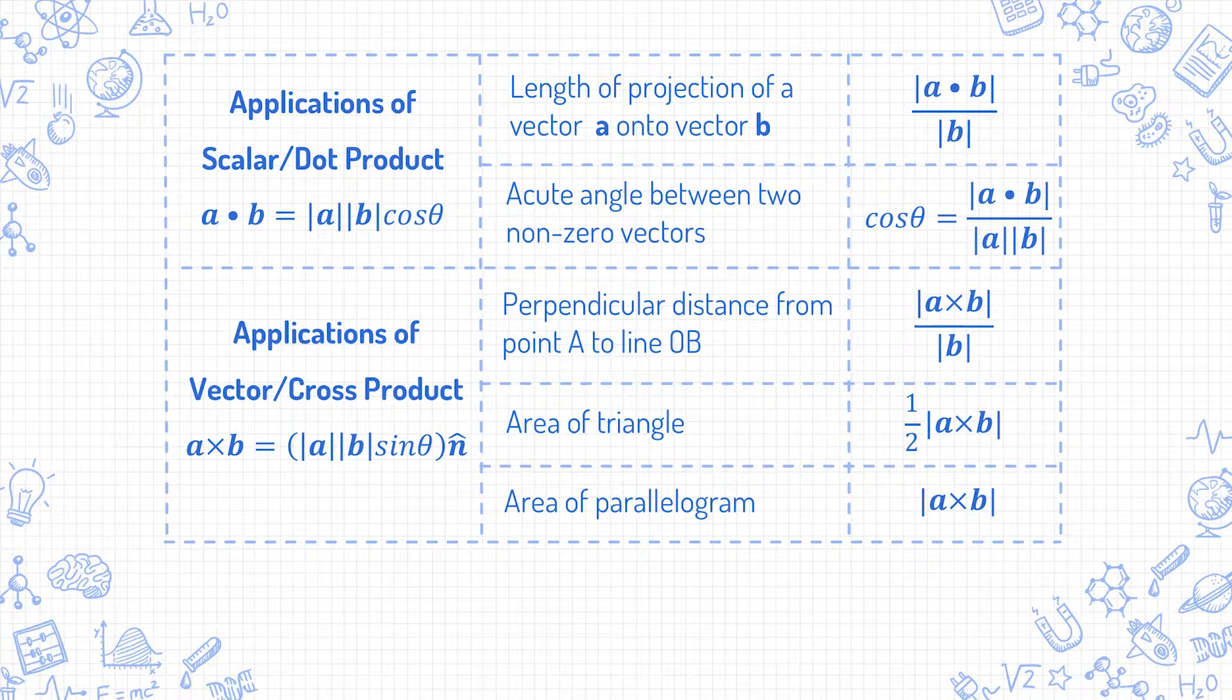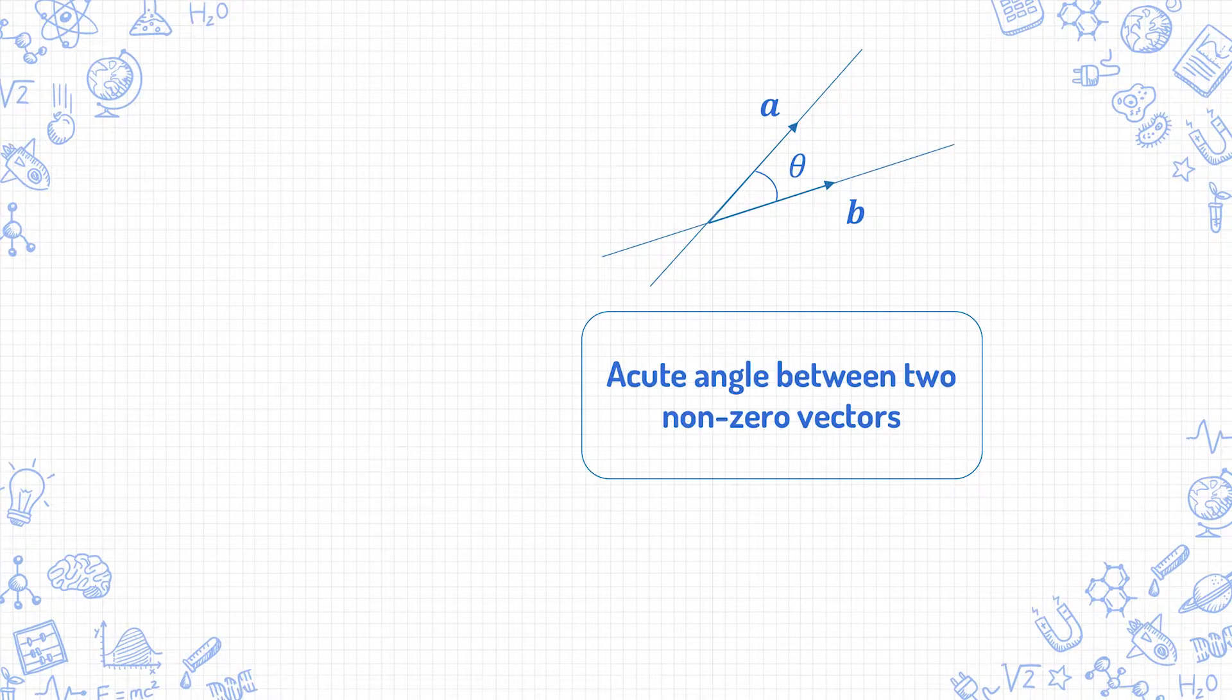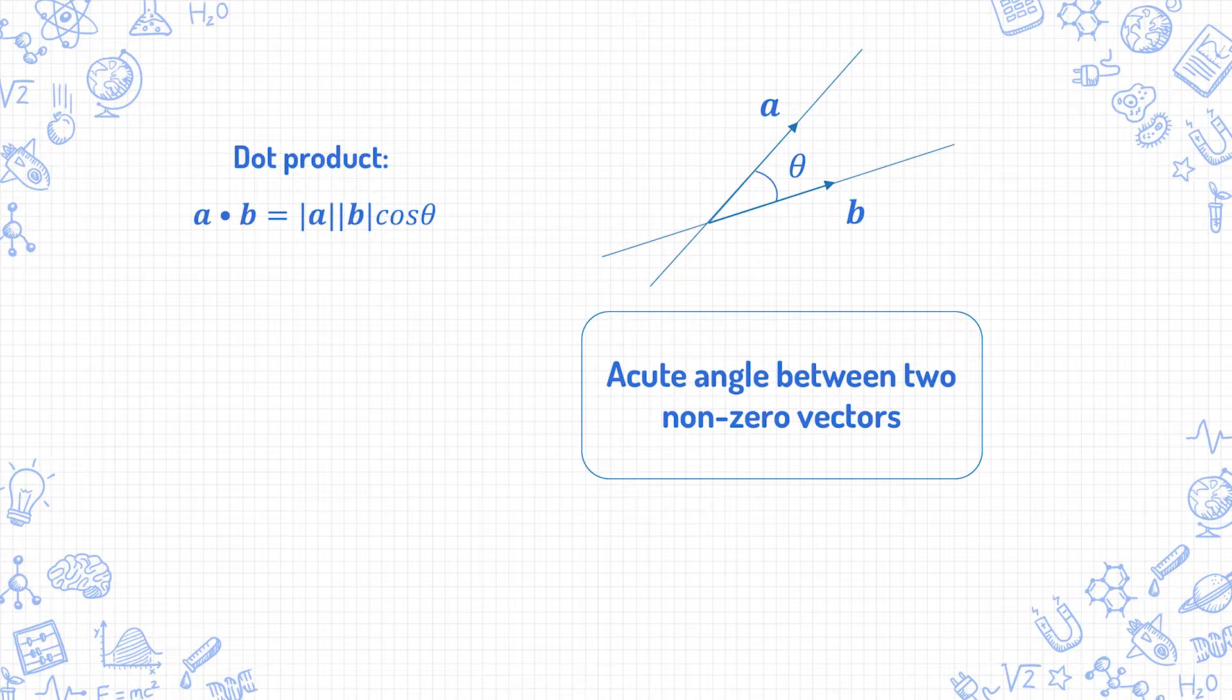Let's start with an easy one. If you have a vector a and a vector b, and you want to find the acute angle theta between the two vectors, then you use the dot product. The definition of the dot product is a dot b equals mod a mod b cos theta, and to find the angle theta,